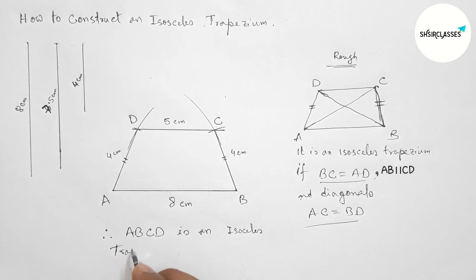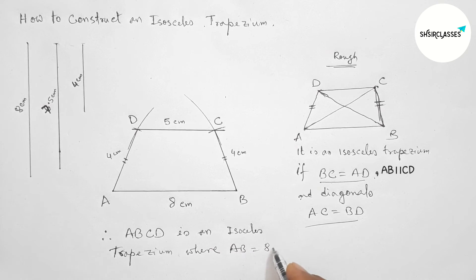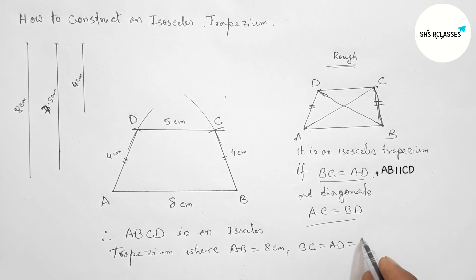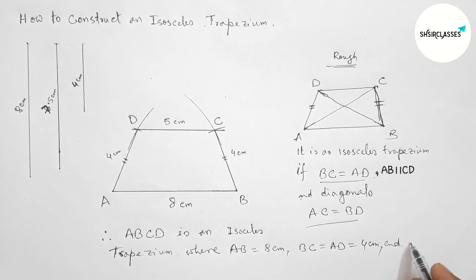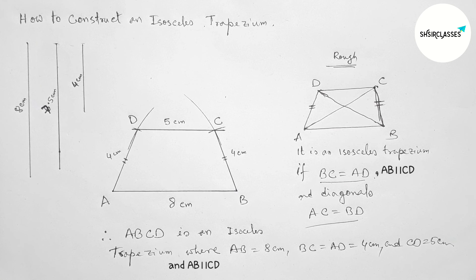An isosceles trapezium where the equal two sides are AD and BC. So BC equal AD equal 4 centimeters, and AB equal 8 centimeters, and AB parallel with CD. So that's all, thanks for watching.